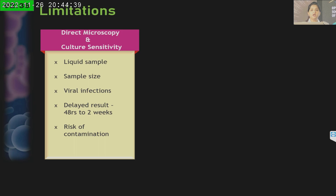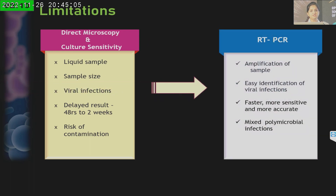Direct microscopy and culture sensitivity have their own limitations. We cannot easily send liquid samples. Sample size needs to be adequate — small scrapings do not yield results. Viral infections are almost impossible to culture. Results can be delayed: for bacteria it may take 48 hours, for fungi it may take nearly two weeks. There is always a risk of contamination. For these reasons, we have PCR.